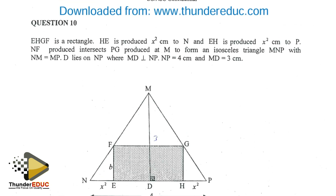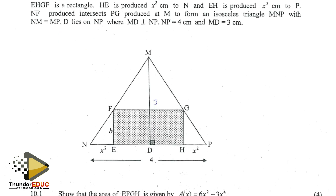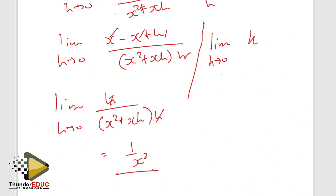He's produced x squared, and that is produced to point P. This and this and this are produced at M. For the isosceles triangle, that is equal to that, so this line is equal to that line. NP is 4 and MD is 3.